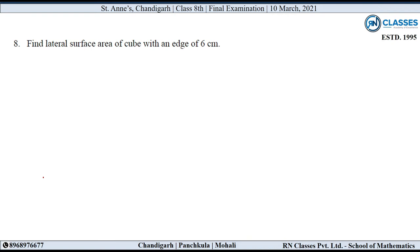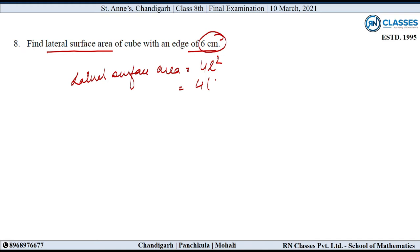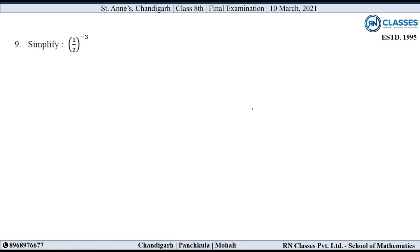8th question: Find lateral surface area of the cube with an edge of 6 cm. तो lateral surface area होता है 4L square. 4 into 6 square = 4 into 36 = 144 cm square.